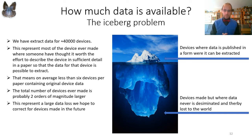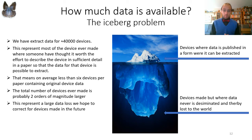We have managed to extract data for around 40,000 devices. These represent most of the devices ever made where someone thought it worth the effort to describe the device in sufficient detail in a paper so that data could be extracted. That means, on average, less than six devices per paper containing original device data, whereas the total number of devices ever made is probably around two orders of magnitude larger — representing a huge data loss. In the future, we hope to be able to collect also that data and enter it into the Perovskite Database.